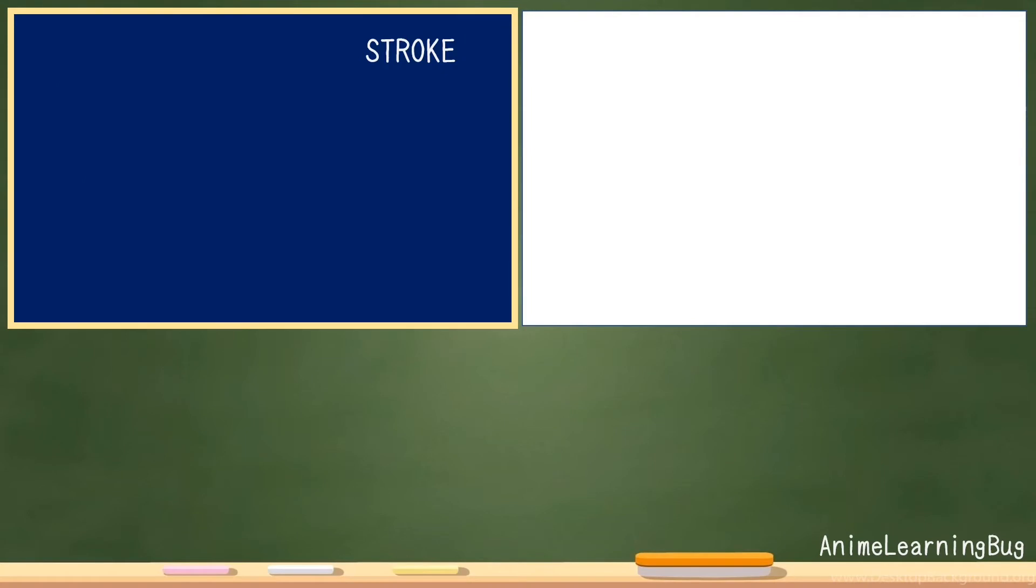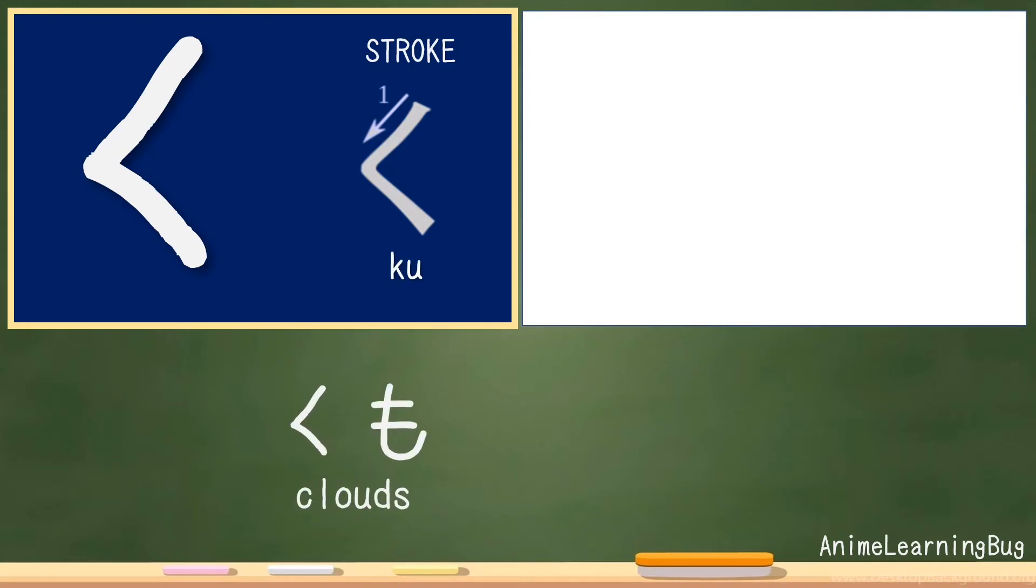Next Hiragana character will be Ku. It looks like we need two strokes for this character, but actually it is counted as one. So for the proper stroke order, we can check on the video on the right side.